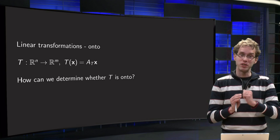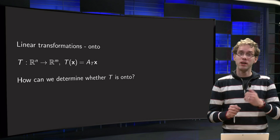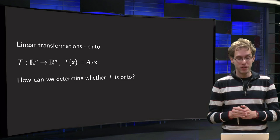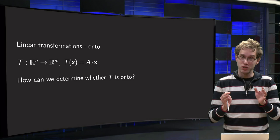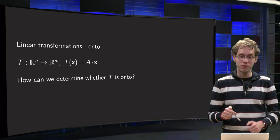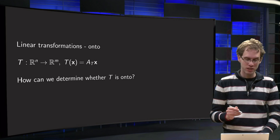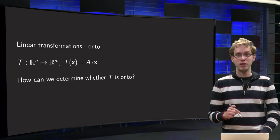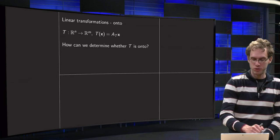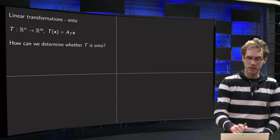So we have our transformation T from Rⁿ to Rᵐ. We know that T(x) can be written using the standard matrix of T, so T(x) equals AT times x, and the question is how can we determine whether T is onto using our standard matrix of course.